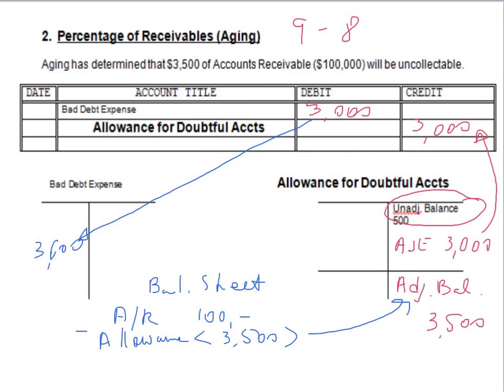Both ways — percentage of receivables and percentage of sales — are allowed by GAAP. It's just a preference for various companies; you can use either of them. A comparison of the two is also given in your textbook — you can take a look at illustration 9-6.